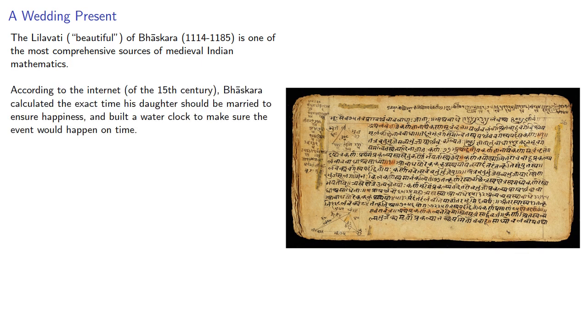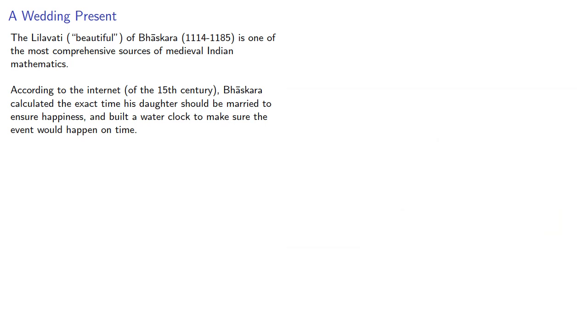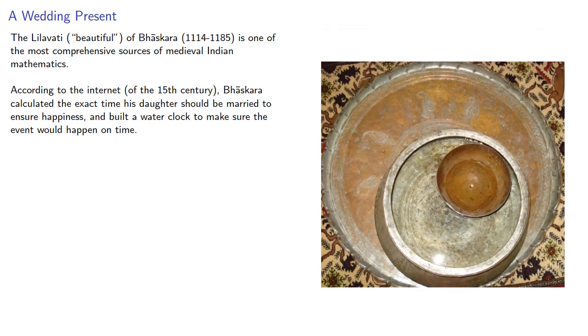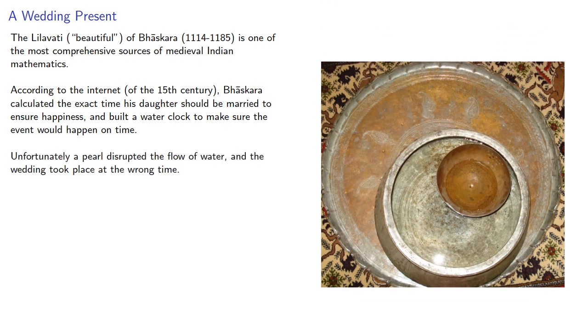According to the internet of the fifteenth century, that would be a bunch of scribes sitting around recording things, Bhaskara calculated the exact time his daughter should be married to ensure happiness and built a water clock to make sure the event would happen on time. Unfortunately, a pearl disrupted the flow of water, and the wedding took place at the wrong time.